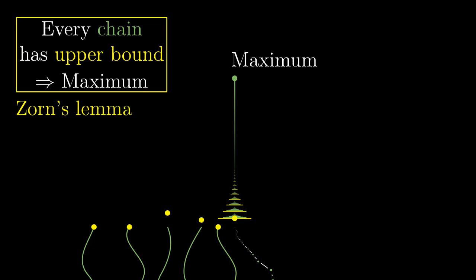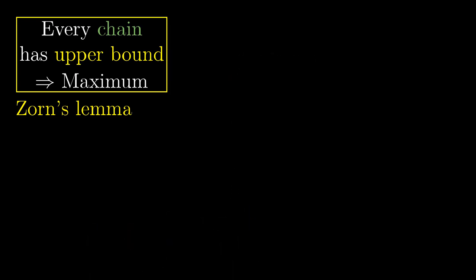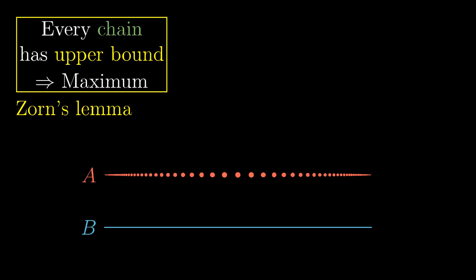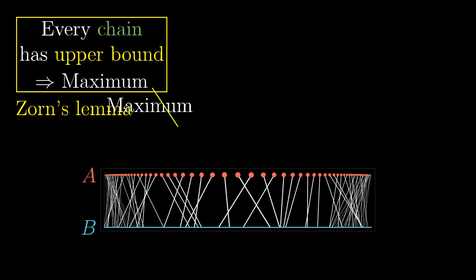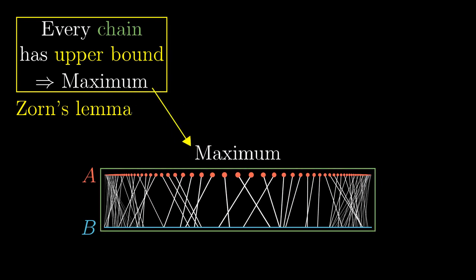So far we have explained why Zorn's lemma is generally true. Now let's look at how to use it. We prove once again that every two sets have comparable cardinalities, this time using Zorn's lemma. A matching covering one of the sets is exactly the maximal element in the partially ordered set of all partial matchings, so its existence follows directly from Zorn's lemma once we verify that every chain of partial matchings has an upper bound.